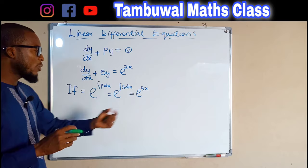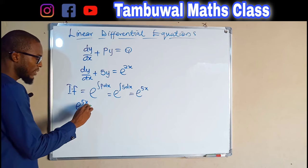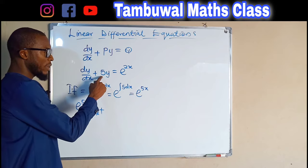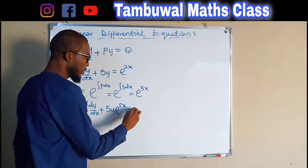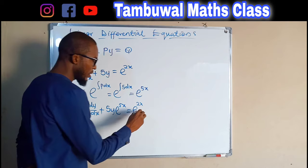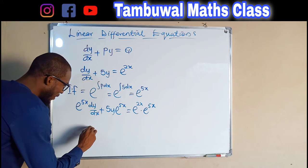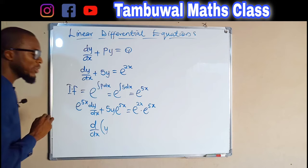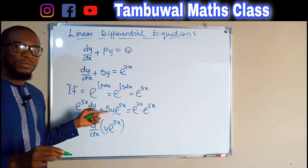What we are going to do is multiply each of these terms by this integrating factor. The first term gives e^(5x) · dy/dx, plus 5y · e^(5x), and this equals e^(2x) multiplied by our integrating factor e^(5x). The left-hand side can always be expressed as the derivative with respect to x of y multiplied by our integrating factor e^(5x).